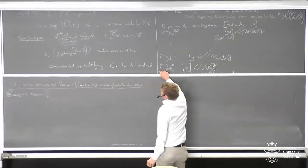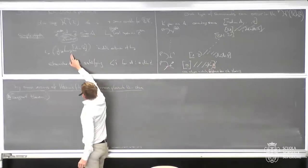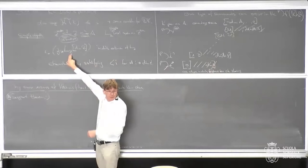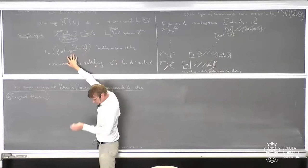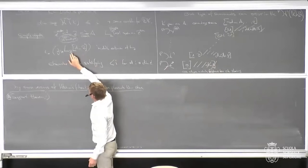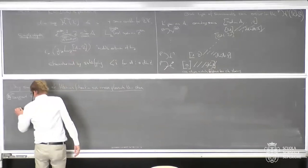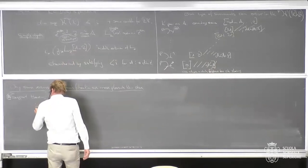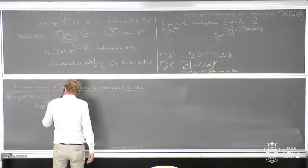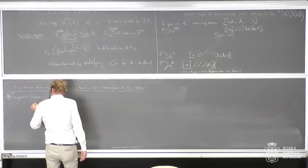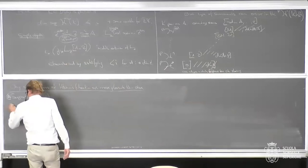The support of a perverse sheaf consists of the generic points occurring in the decomposition. The simple objects are obtained from middle extensions of local systems on smooth locally closed subvarieties, and their generic points tell you where things are supported. The setup for us was the moduli space of Higgs bundles, living over the Hitchin base, with an action of the relative Picard group — the Picard group of the relative spectral curve.